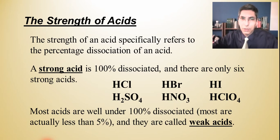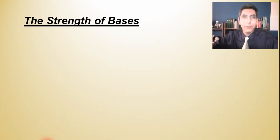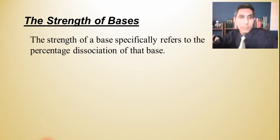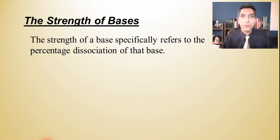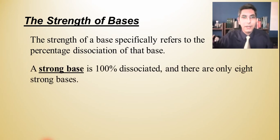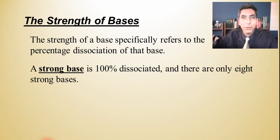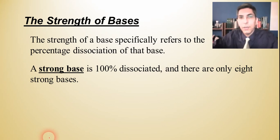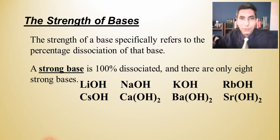We'll work more with weak acids in the next lesson. When we talk about the strength of bases, it's very similar — the strength of a base specifically refers to how dissociated that base is. Strong bases are 100% dissociated, breaking apart completely into their component ions. In AP Chemistry, there are only eight strong bases you need to know.